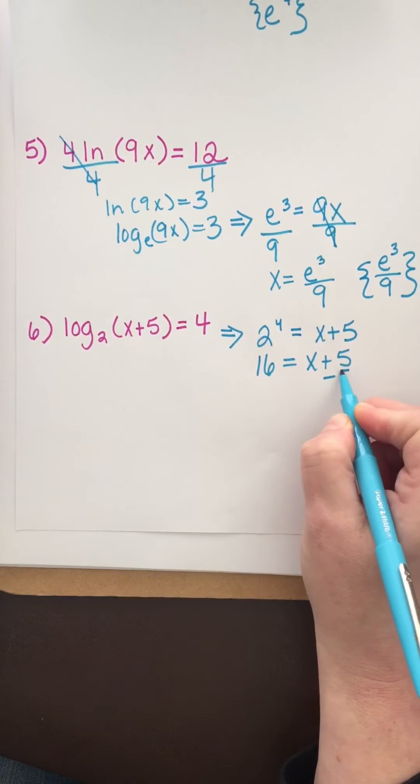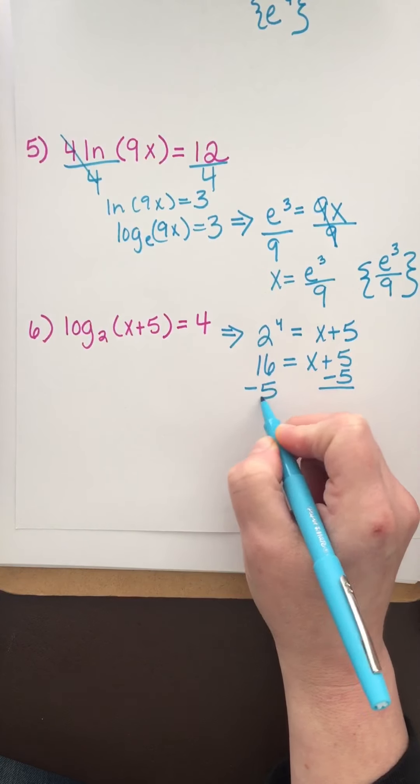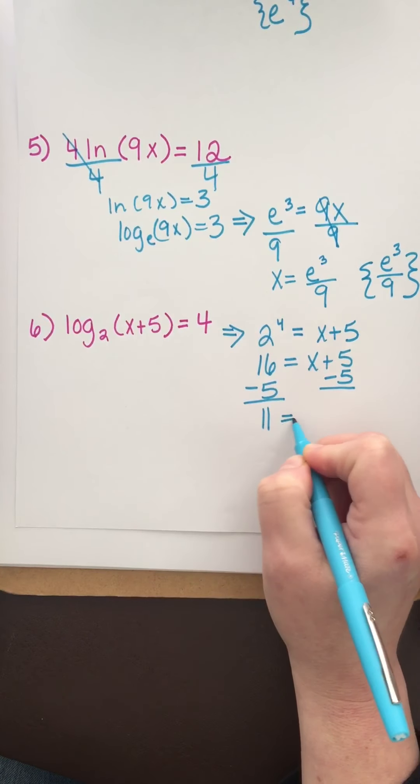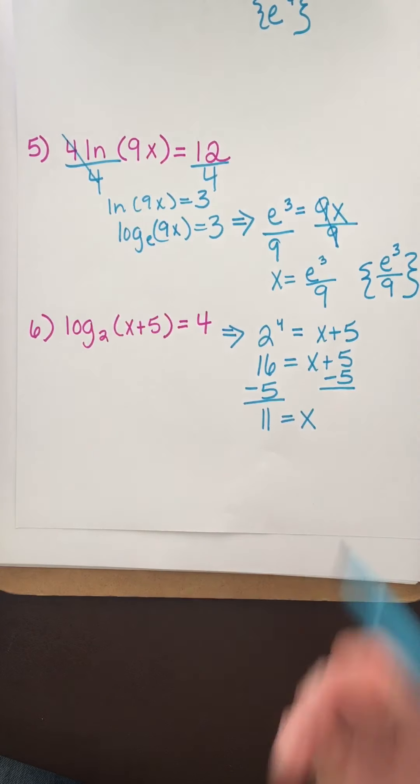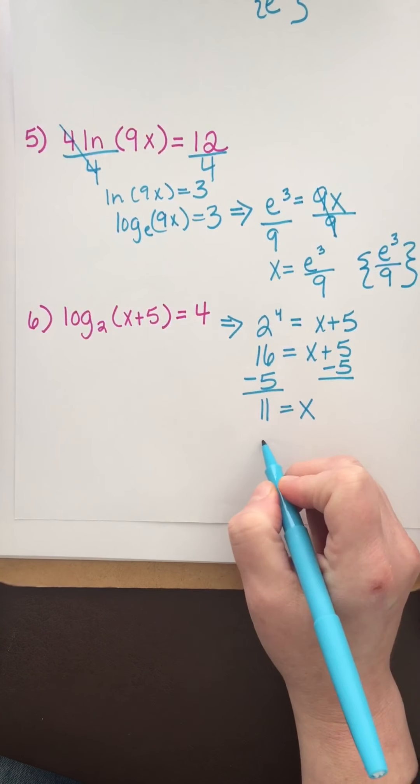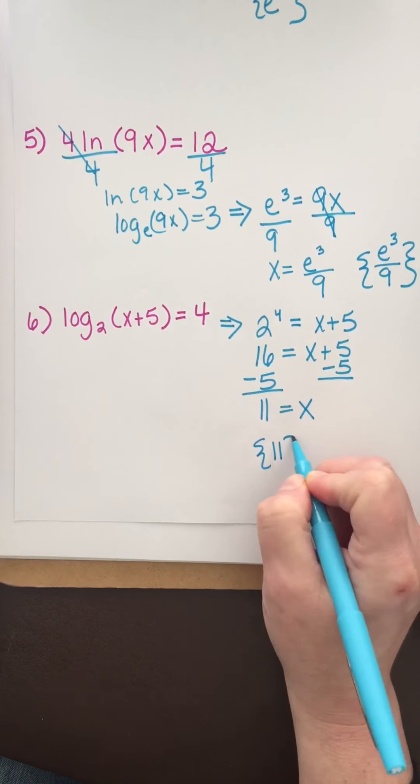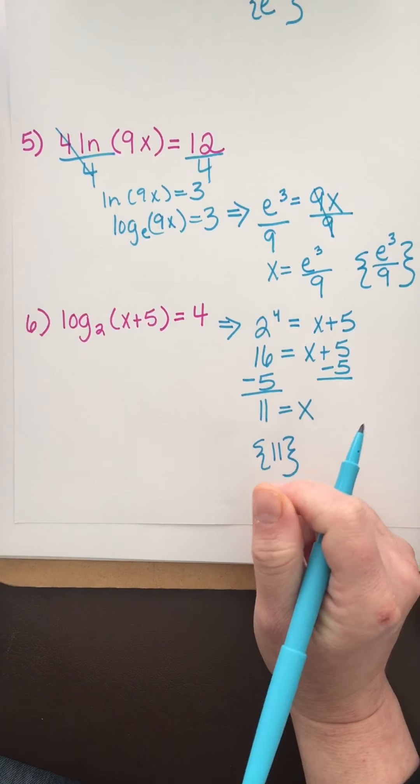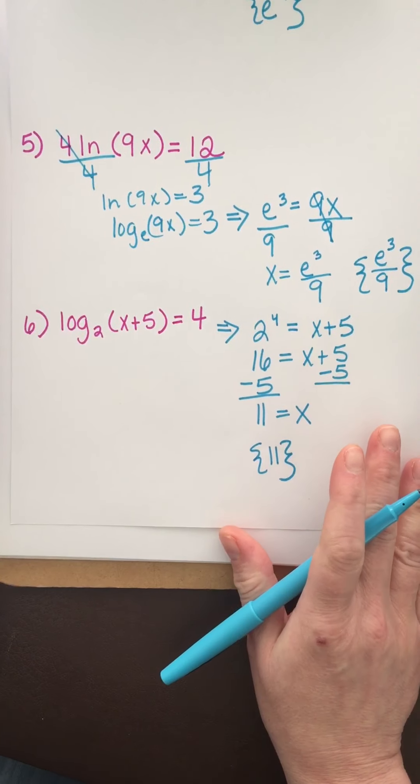2 to the 4th is 16. To undo plus 5, subtract 5, and we get x equals 11. Plugging that in gives 16, which is positive, so the solution is 11. That's it for today. Have a great day.